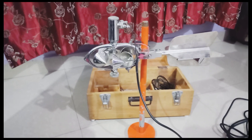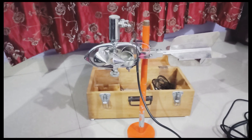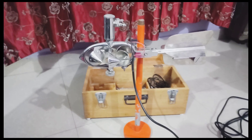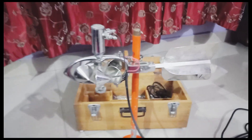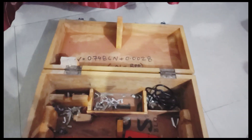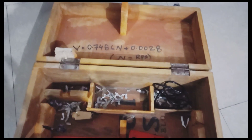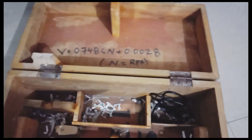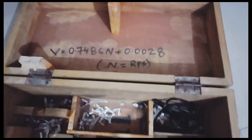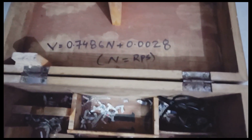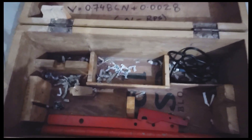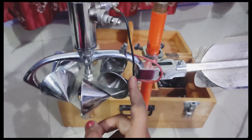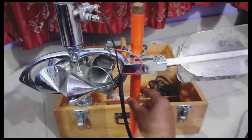In this video I'm going to show how we can measure velocity from a current meter. This is a current meter — all the instruments come in this box. For different current meters there is a different empirical formula, which is written here. For this current meter we have this formula. This is the main current meter, this is a cup, and this is a rod.